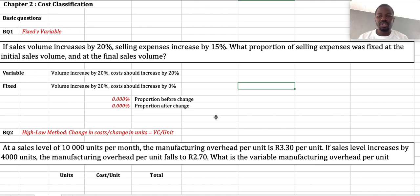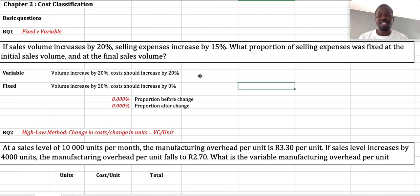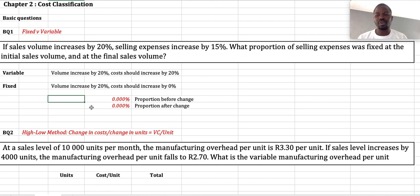So our conclusion is this is a mixed cost. It has got a portion that is fixed and also a portion that is variable. How do we determine the portion that is fixed? The activity increased by 20%, the costs increased by 15%. So if we say 20 minus 15, we get 5%. This 5% out of 20 is the fixed cost that did not increase.